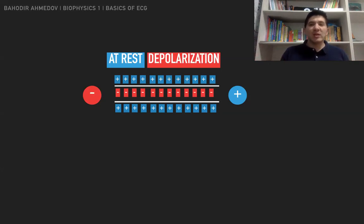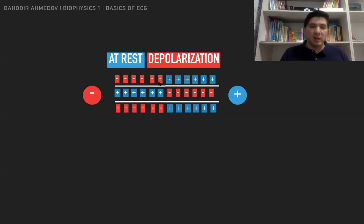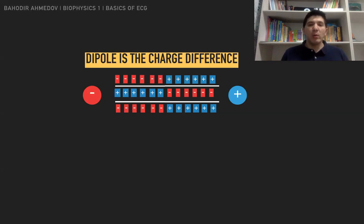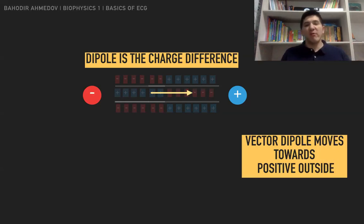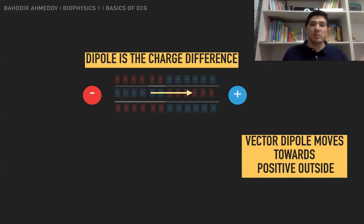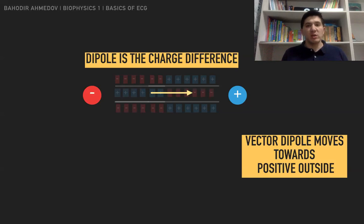I would like to start the depolarization and pause when it reaches the middle of this chain — when it has depolarized half the cells. I would like to measure the charge difference. The charge difference is measured using a dipole, represented as a vector that tells us how much the charge difference is. If the charge difference is higher, the vector is going to be longer. If the charge difference is smaller, the vector is going to be shorter.